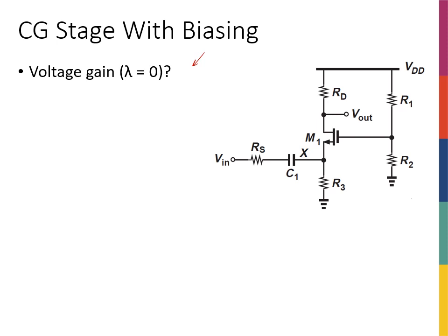Now let's look at what happens to the voltage gain. This is another opportunity to pause the video and try the voltage gain calculation yourself, since it is very similar to what we've done before. You should be able to solve this without drawing the full small signal model — though that is always a valid solution, it's lengthy and time-consuming. We know that if we call the voltage at the source node VX, then the gain of this amplifier, Vout over VX, is gm*RD.